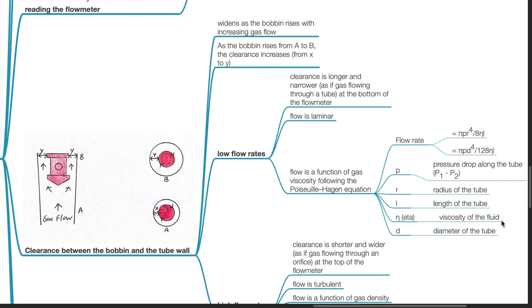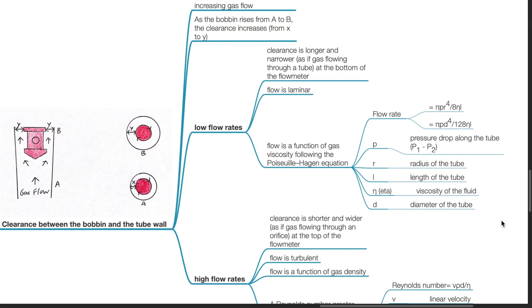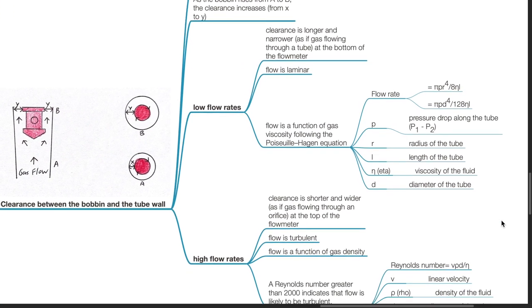At low flow rates, the clearance is longer and narrower, as if gas flowing through a tube at the bottom of the flow meter. The flow is laminar and flow is a function of gas viscosity following the Poiseuille-Hagen equation. Flow rate equals pi p r to the power of 4 divided by 8 eta l, or pi p d to the power of 4 divided by 128 eta l, where p equals pressure drop along the tube p1 minus p2.